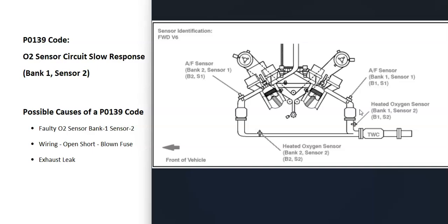For example, this is a 2007 Camry with the 3.5 liter V6. As you can see, bank one sensor two is right here, located after the catalytic converter or right on it. It's called the downstream oxygen sensor. Sensor one is located before the catalytic converter and is called the upstream oxygen sensor.